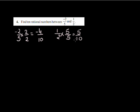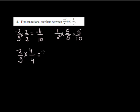Between -4/10 and 5/10 there are only 8 rational numbers, but I need 10. So I must choose a different denominator. I will multiply -2/5 by 4/4 to get -8/20, giving a denominator of 20.